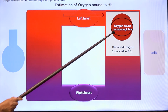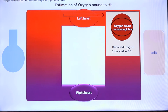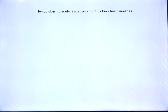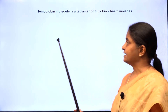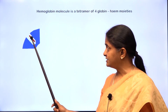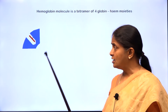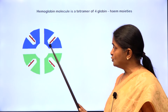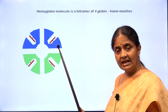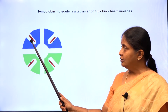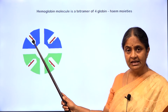We will now see how to estimate the amount of oxygen bound to hemoglobin. Prior to that, we will look at properties of hemoglobin in brief. Hemoglobin is a tetramer of four globin-heme moieties. Two of these globin chains are alpha globin chains and two are beta globin chains. Molecular oxygen binds to the iron atom present in the heme moiety.